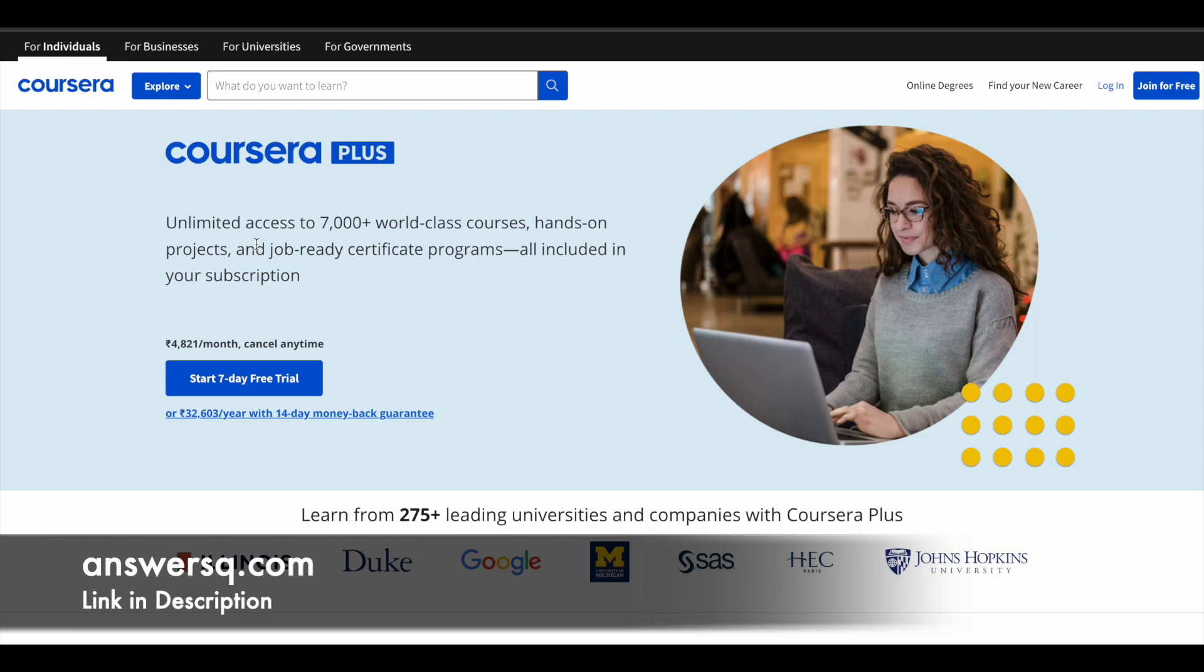If you want to purchase any course in Coursera, instead of buying that single course, you can offer Coursera Plus subscription. With the subscription you will get unlimited access to 7000 plus world-class courses and you can also get access to job-ready certificate programs that are provided by top companies like IBM, Google, Amazon. If you are interested in this, just check out the link in description for Coursera Plus subscription.